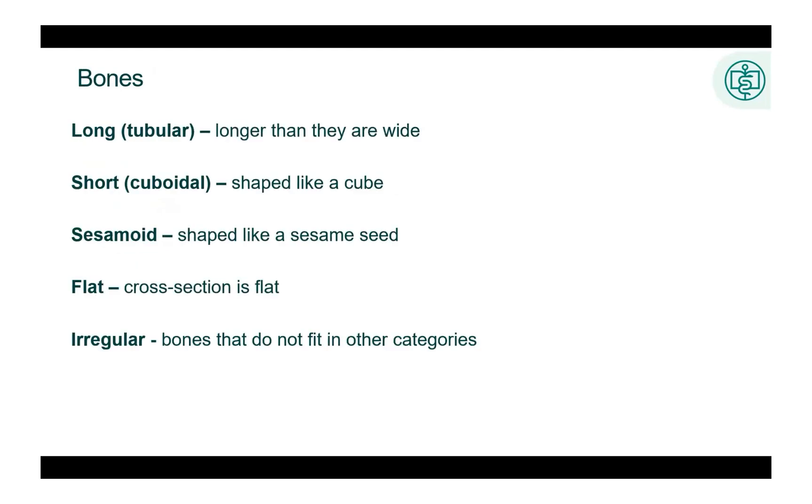Bones can be classified according to their shape. Long bones are longer than they are wide and are found in the limbs, such as the femur and the humerus. Examples of short bones include the carpal bones of the wrist and the tarsal bones of the ankle. Sesamoid bones are shaped like a sesame seed and can be found embedded in tendons or joints. There are two sesamoid bones in the ball of the foot beneath the big toe joint. The patella in the knee is the largest sesamoid bone. Flat bones have a layer of spongy bone between two thin layers of compact bone. The cross section is flat, not rounded. The skull and ribs are examples of flat bones. Irregular bones are the bones that do not fit into the other categories of the bones. Vertebrae have their own shape and are considered irregular bones.